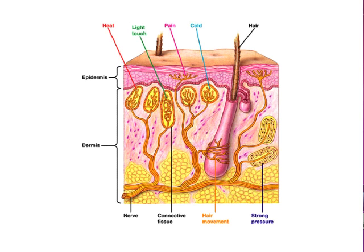Have you ever wondered why your fingertips are more receptive to pain than other parts of your body? This is due to the fact that mechanoreceptors, which are located in the human skin, are not distributed evenly all over the body. For example, fingertips and tongue may have as many as 100 receptors per centimeter squared, whereas the back of the hand has fewer than 10 per centimeter squared.